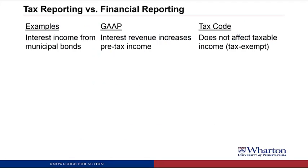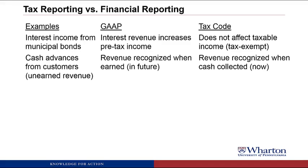Let's quickly look at some examples of how specific accounting policies differ between the financial statements and the tax return. One example is interest income from municipal bonds. According to GAAP or IFRS, on your financial statements, you book this as interest revenue, which increases your pre-tax income. But for the tax code, this is tax-exempt income — it doesn't show up on the tax return at all and won't affect your taxable income.